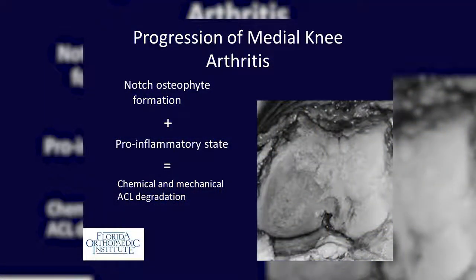Along with a pro-inflammatory state, you get a milieu for chemical and mechanical ACL degradation. Once the ACL becomes insufficient, you get progression of arthritis to the contralateral compartment and subsequent tricompartmental arthritis. We're trying to capture those knees with regards to patient selection before they progress to tricompartmental arthritis.